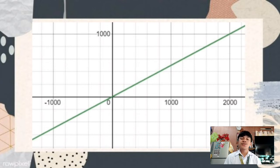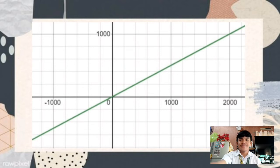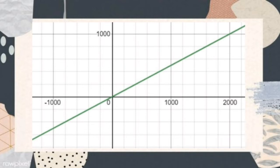Shown on your screens right now is the graph of the equation. As you can observe, the line is heading upwards, which illustrates the direction of the mountain climber.